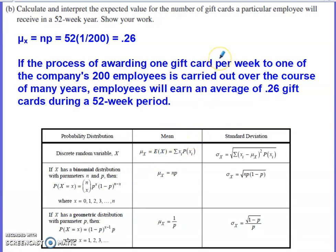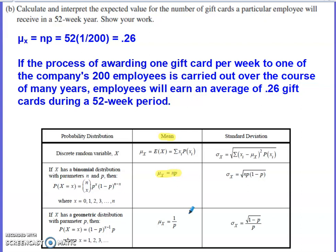Part B asks us to calculate and interpret the expected value for the number of gift cards a particular employee will receive in a 52-week year. The expected value of a probability distribution is simply its mean. Using the binomial formula, I take the number of trials, 52, multiplied by the probability of success, 1/200, and get 0.26.